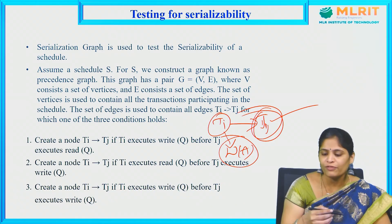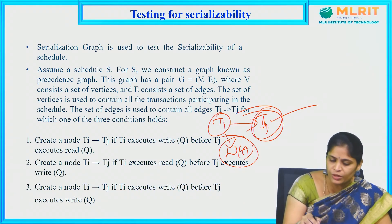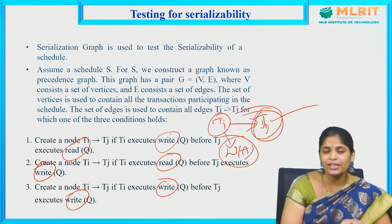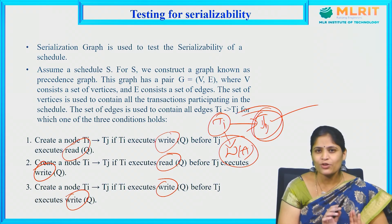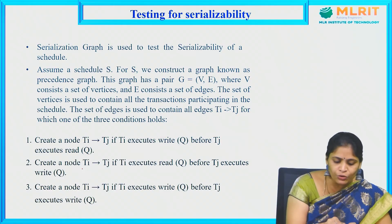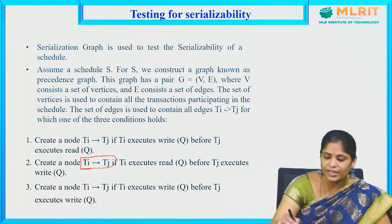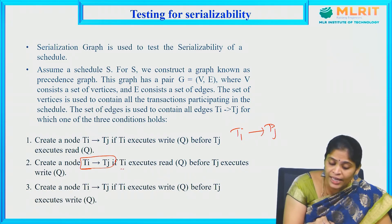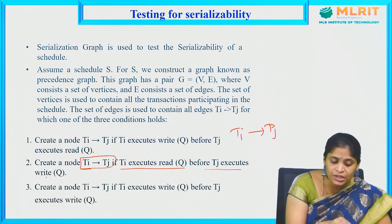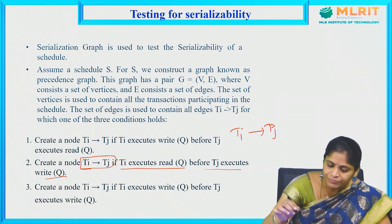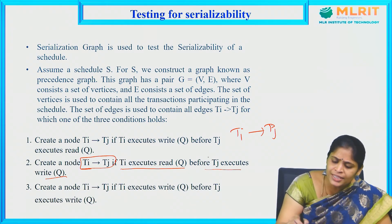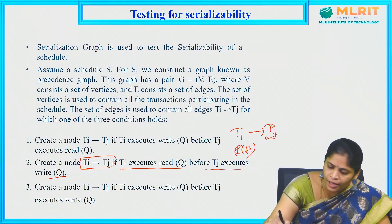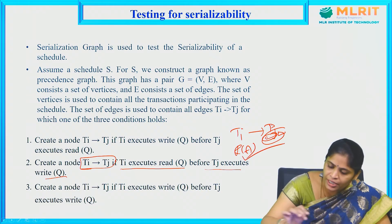Here we are discussing about conflicts. The second condition: create a node TI tends to TJ if TI executes Read before TJ executes Write of Q. TI executes read operation — you are reading A — before TJ executes write operation. TI must read the data item before TJ writes. That is the read-write conflict, the second condition.